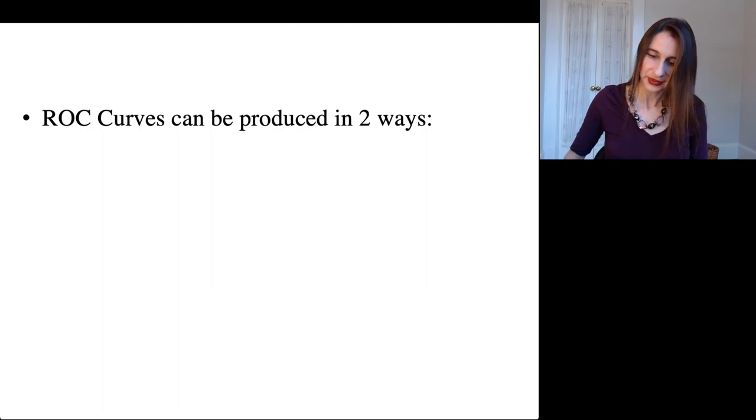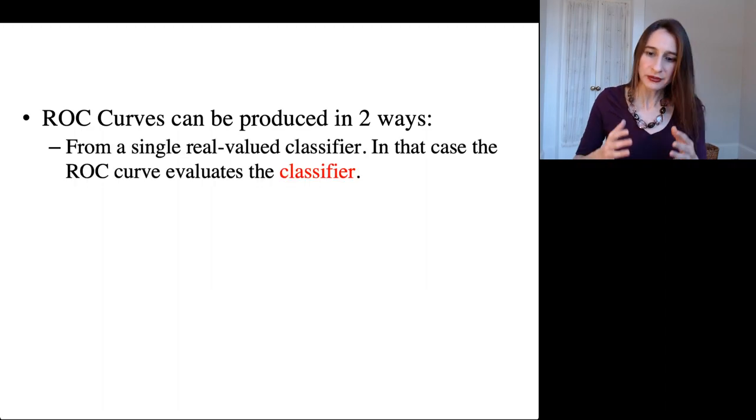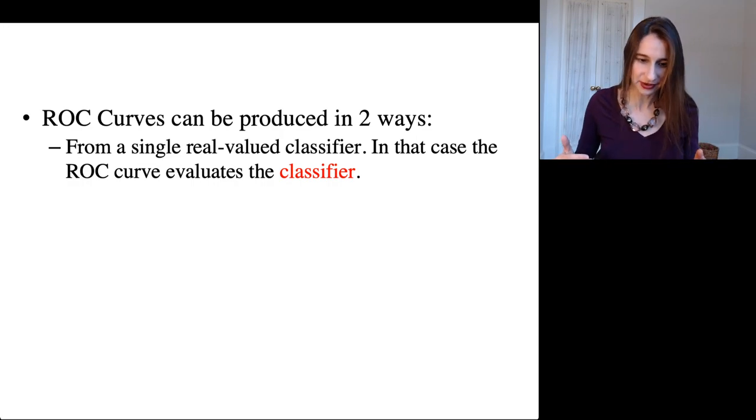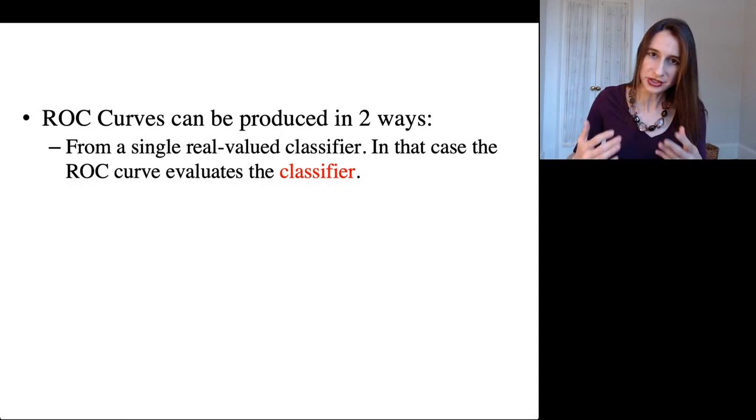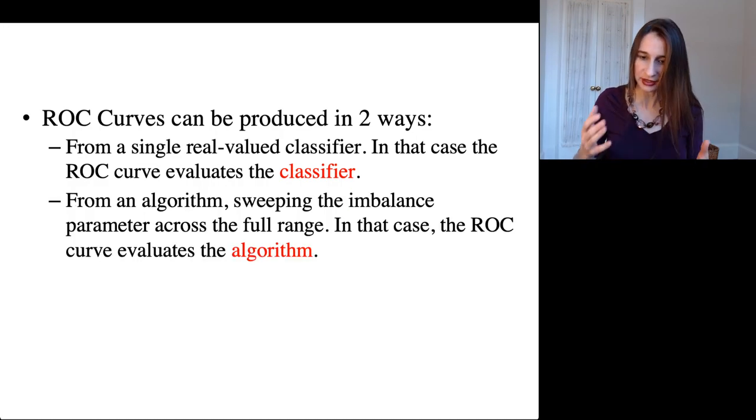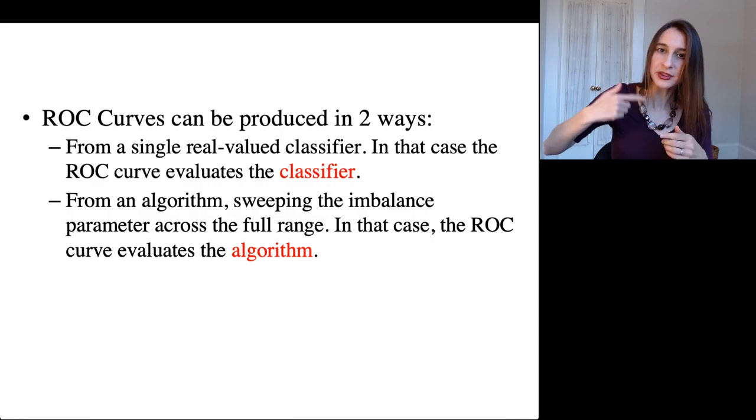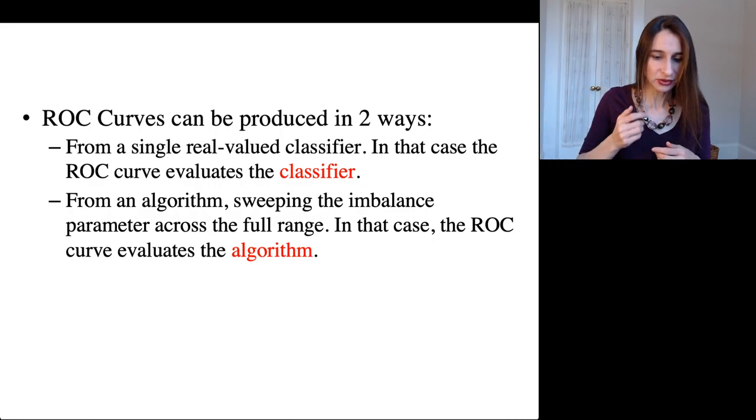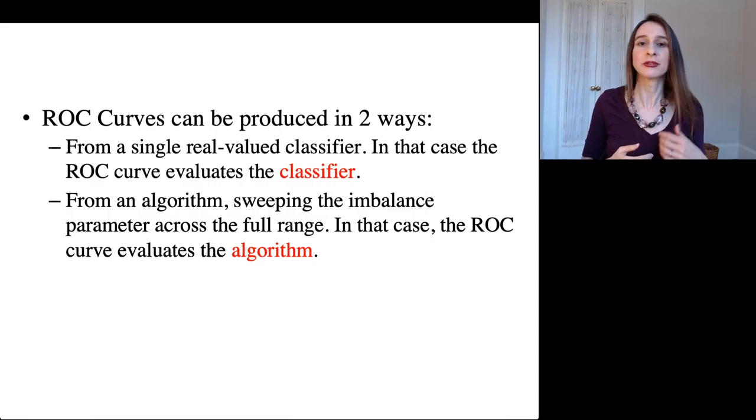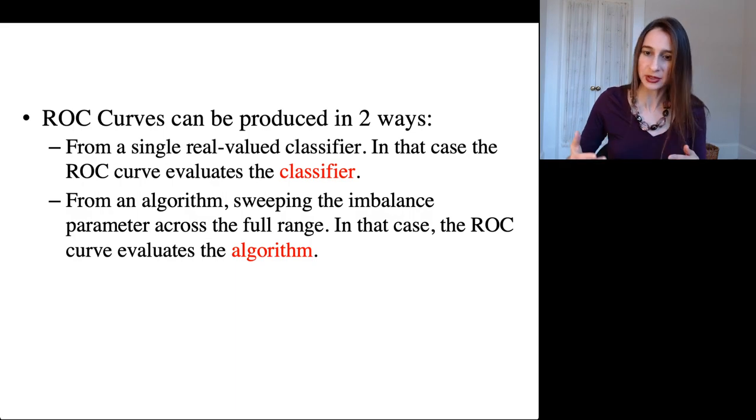Okay, so just to summarize, ROC curves can be produced in two ways. One for a single real value classifier. In that case, the ROC curve evaluates the classifier. And then the other perspective, when you sweep this imbalance parameter and run the algorithm over and over again, you now have an ROC curve for a whole algorithm and it's evaluating the algorithm.